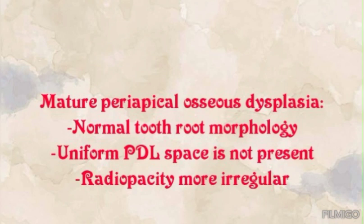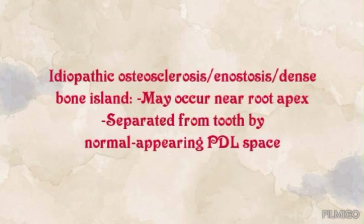The next differential diagnosis is mature periapical osseous dysplasia, which shows normal tooth root morphology but uniform periodontal space is not present and radiopacity is more irregular. Also included are idiopathic osteosclerosis, osteopetrosis, and dense bone island, which may occur near the root apex but are separated from the tooth by a normal appearing periodontal space.